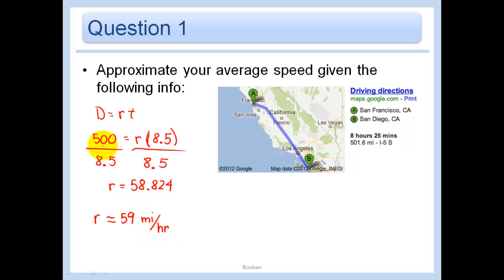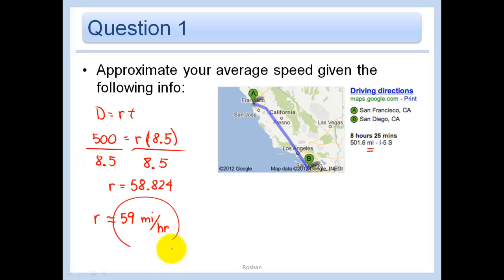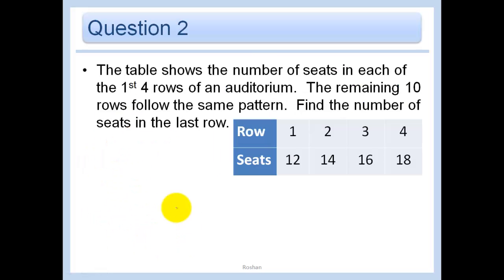The reason for that, of course, is that the 500 was measured in miles, and the 8.5 was how many hours we traveled. Next example.